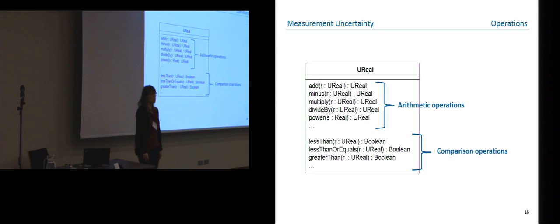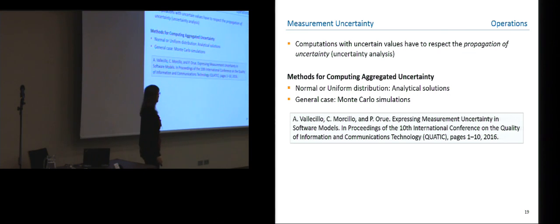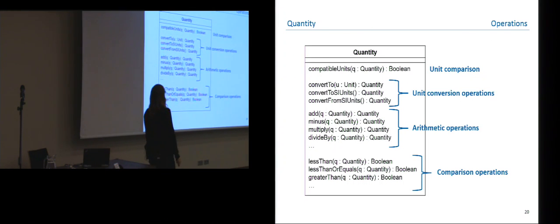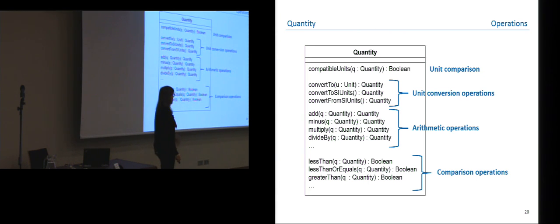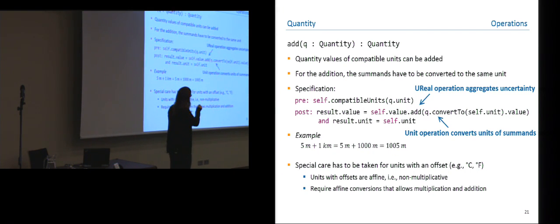We have also defined operations on the UncertainReal type for arithmetic and comparison operations — for details I refer you to an earlier publication by Antonia and colleagues presented at the QAPTIC conference. When doing computations with uncertain values, we have to respect the propagation of uncertainties and aggregate them using appropriate methods. The operations for the quantity type use the unit operations and the uncertain real operations — for example, when adding two quantity values, we first convert the summands to the same units and then call the add operation defined for UncertainReal to handle uncertainty aggregation.